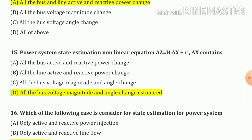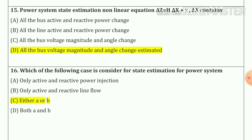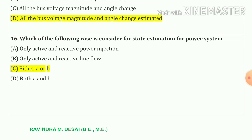Question number 15: Which of the following cases is considered for state estimation for power system? Our answer is option number c — either a or b. Question number 16: Which of the following cases is considered for state estimation for power system? Our answer is option number c — either a or b.